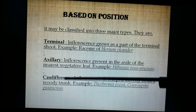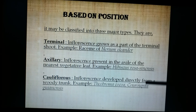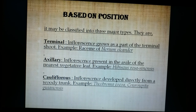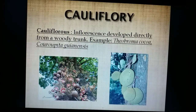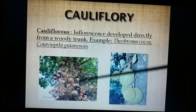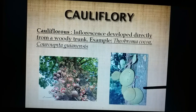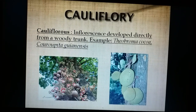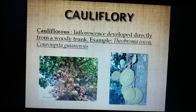Very rarely we see the cauliflorous nature, which means the inflorescence appears on woody trunks or aged branches. We can see this in theobroma, couroupita, and jackfruit — botanically called Artocarpus. This is Couroupita guianensis, the cannonball tree. The inflorescence comes from the aged trunk; bracts called cauline bracts develop into flowers and then into fruits. Such a condition is called cauliflorous or cauliflory, seen in Artocarpus, casuarina, theobroma, and couroupita.